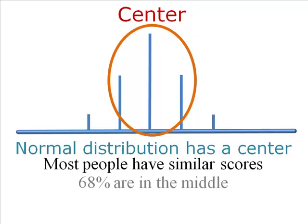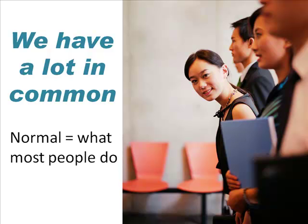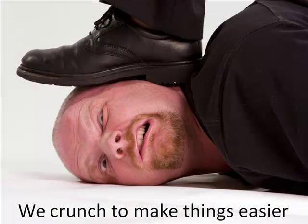This is an important point: we have a lot in common with other people. This commonality allows us to describe a characteristic as normal. What we want to find is one score that represents the entire distribution. The whole idea of number crunching is to make it easier — no one can process or understand all of the scores, so we look for patterns and shortcuts.